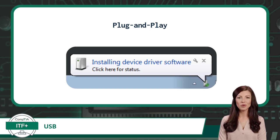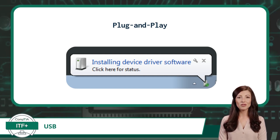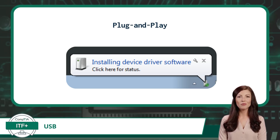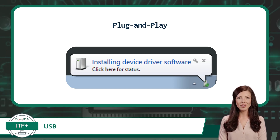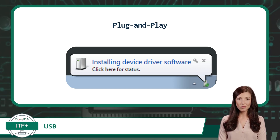Feature number one: USB plug-and-play. USB plug-and-play refers to the ability of a computer system to automatically detect and configure a USB device. Plug-and-play revolutionized the way we connect and use peripheral devices by eliminating the need for complex manual software installations. It's a convenient and user-friendly option — just plug in your device and you're done.